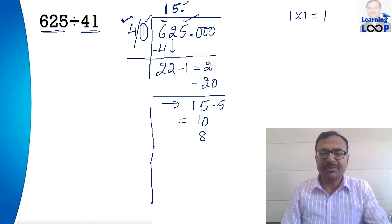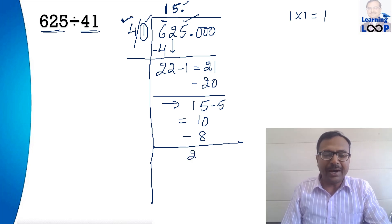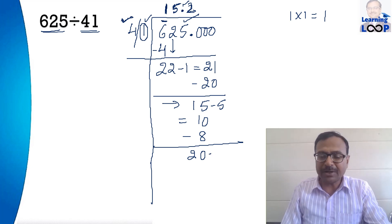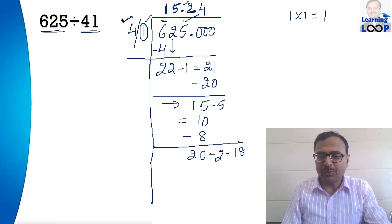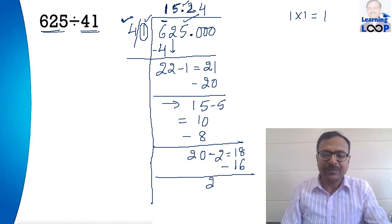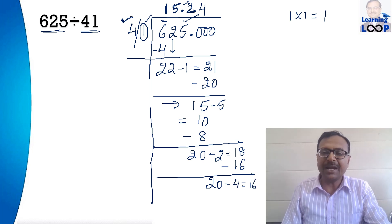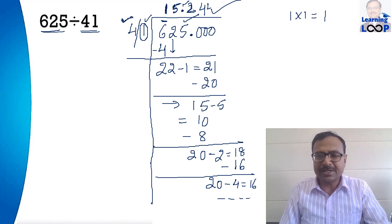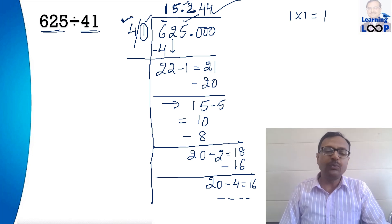4 times 2 is 8, which gives a 2 after the decimal. I bring a 0 down, and 1 times 2 is 2, so subtracting 2 gives 18. Now 4 times 4 is 16, giving another digit 4 and remainder 2 with a 0. Then 1 times 4 is 4 to subtract, giving 16 again. You can follow the same method for any number of digits. So 625 divided by 41 is approximately 15.244, rounded to 3 decimal places. You can continue the procedure for more digits.